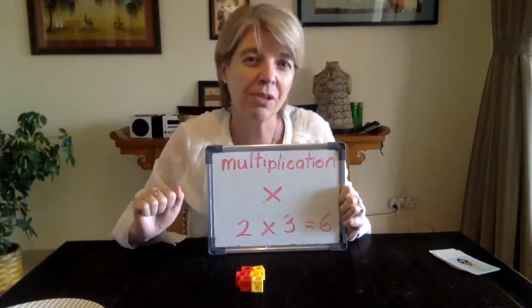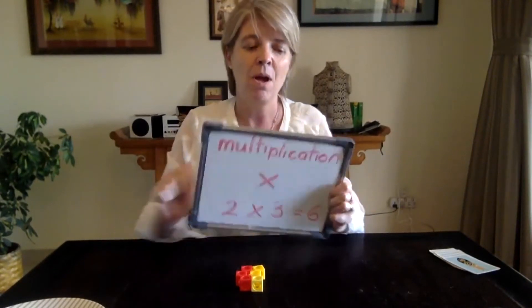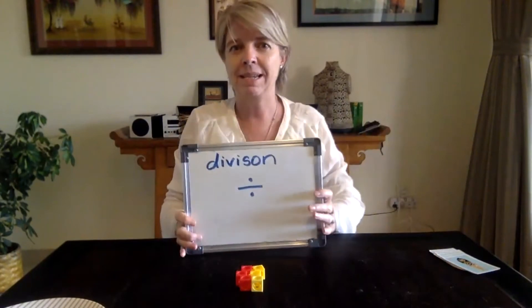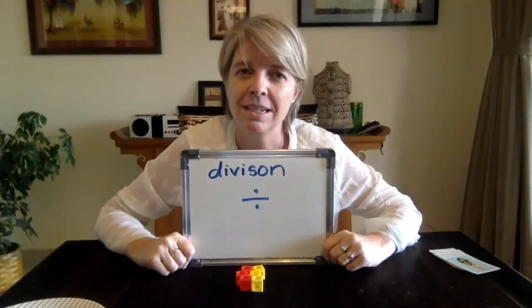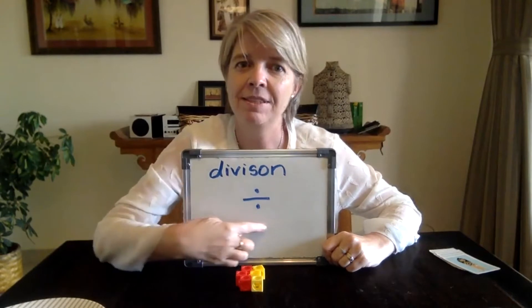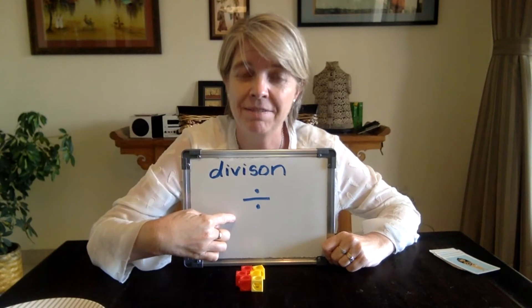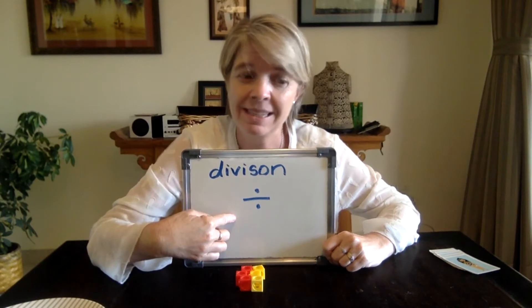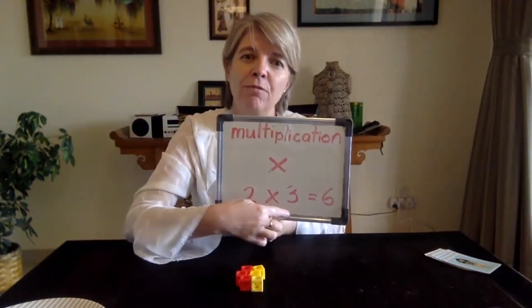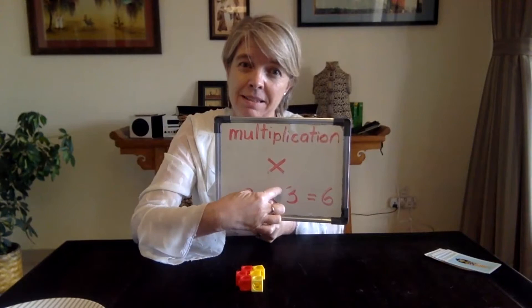Well we're so good at that that now we are going to do the opposite. The opposite is called division and this is the symbol that we use to show it. Division means dividing and really instead of being anything fancy it just means to share it out fairly. Remember when we did multiplying we added groups the same size together. Now we're going to share them out. So you watch.